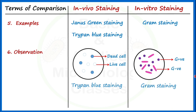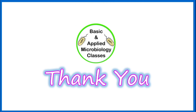In vivo staining is very useful when it comes to disease diagnosis, while in vitro staining is useful in identifying various types of microorganisms, especially bacteria, and also to check the purity of stored bacterial cultures that have been stored for a longer time period. These are some of the practical applications of in vivo and in vitro staining. I hope this information will be useful for all of you. Thank you so much, keep watching.